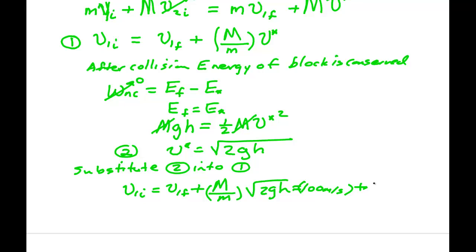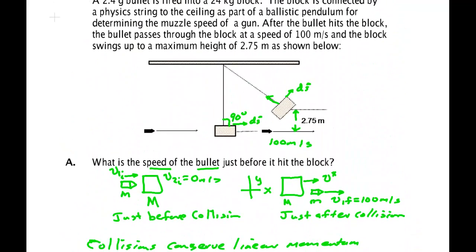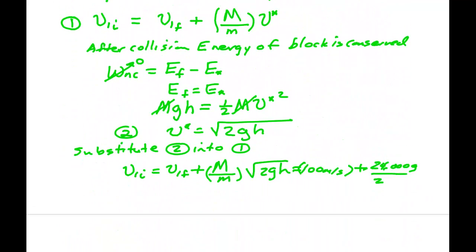Now we can write that in kilograms or we can do it in grams. So 24,000 grams divided by I think it said 2.4 grams. Yeah, 2.4 grams. Grams cancel. So that's a factor of 10,000.